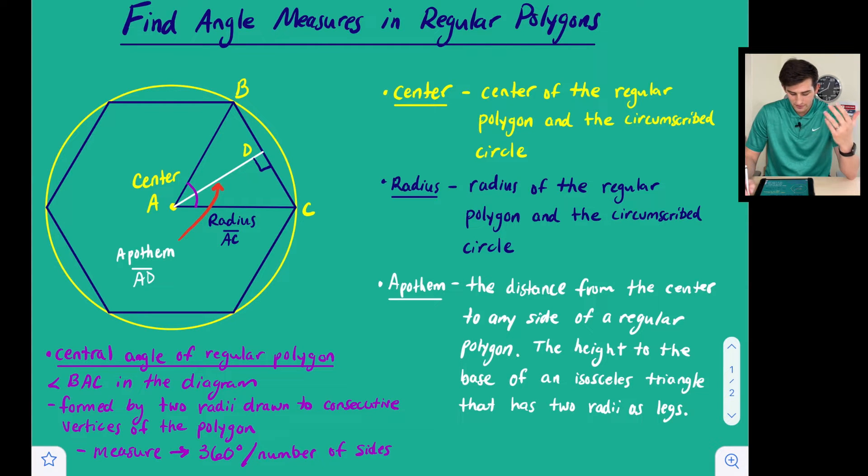Next we're going to talk about the radius. The radius would be our navy blue segments here which go from the center to the edge of our circle. But our radius is also from the center of the regular polygon to the vertex of the regular polygon.